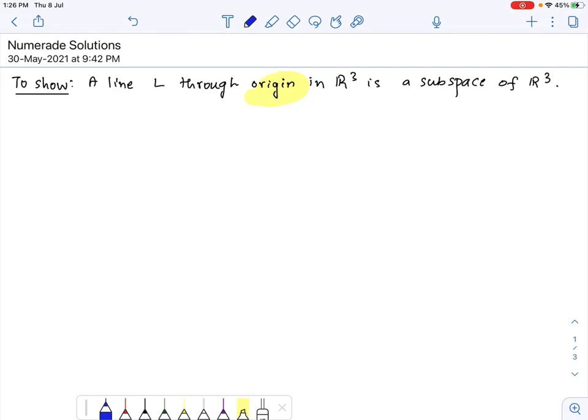So first we realize that the line L can be represented by parametric equations of the form x equals at, y equals bt and z equals ct where a, b, c are real numbers and t is the parameter.